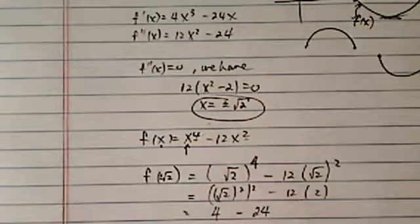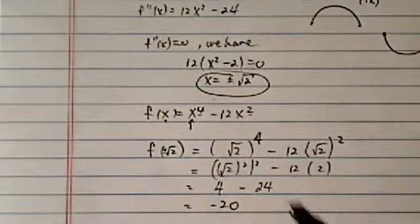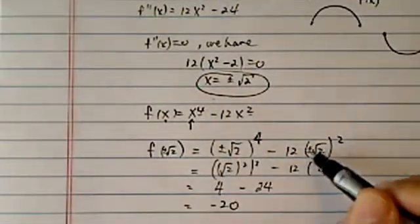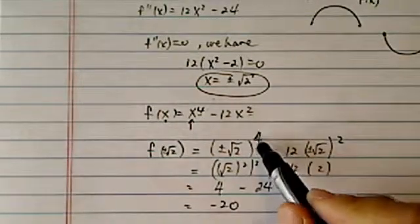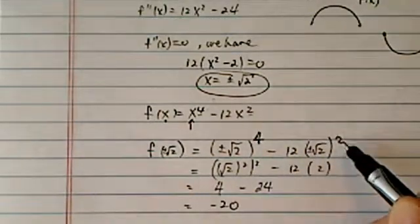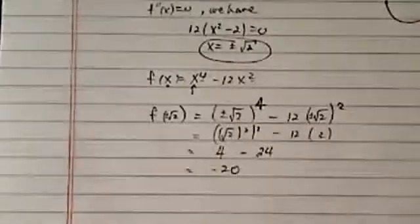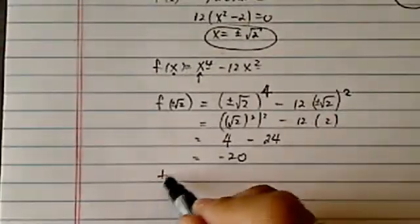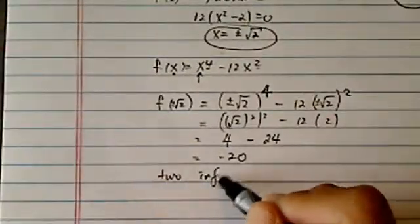As a matter of fact, don't be lazy here, it's a Saturday morning, we can put a plus or minus in there. Like I said before, this is a 4th power, this is a square, so the result doesn't really matter. So we have two inflection points.